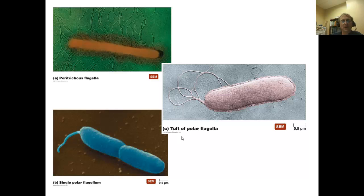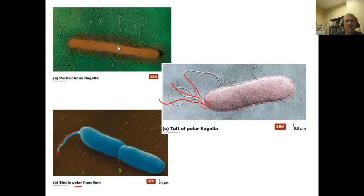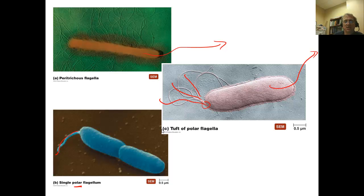Different microorganisms have very distinct and unique patterns of flagella. Some may have only a single flagella at one end — referred to as a polar arrangement. Some may have multiple flagella all attached at one end. Other species may have flagella arranged all around the periphery, all around the outside of that microorganism. In every case, the flagella rotate because of the action of ATPase, and the microorganism moves as it swims.